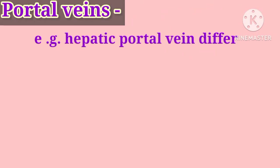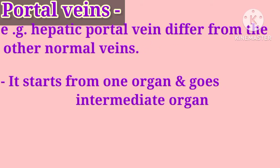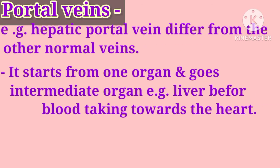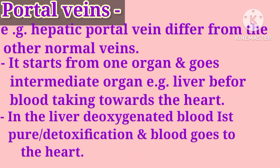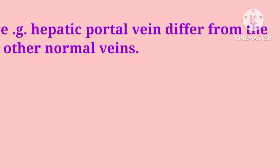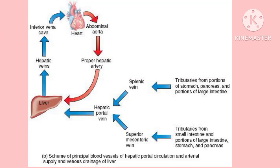Some veins do not go directly to the heart; they first go to an intermediate organ, and these are called portal veins. An example is the hepatic portal vein, which carries blood from the stomach, intestine, pancreas, and spleen, and goes first to the liver for filtering and detoxification, and then to the heart.